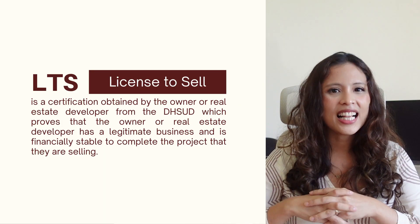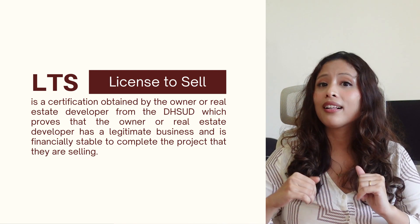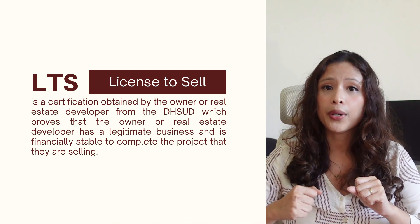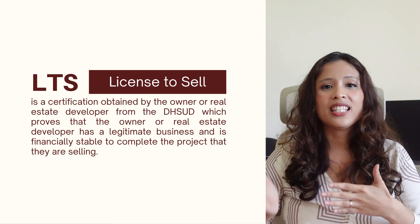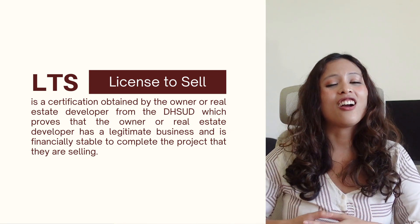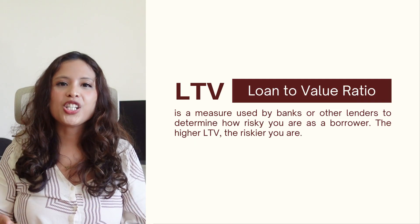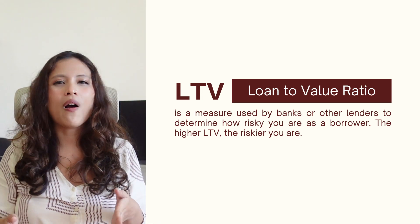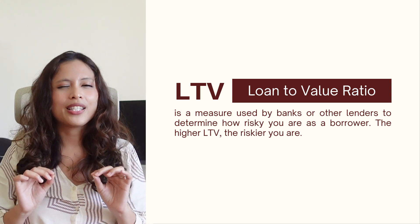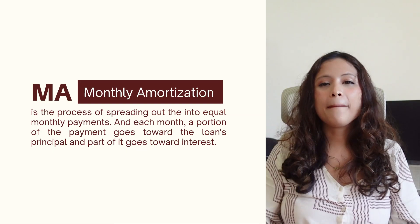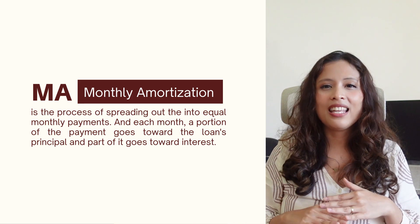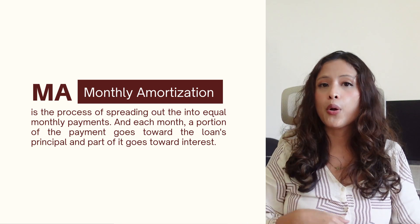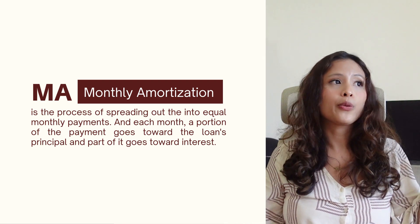LTS, for License to Sell, is a certification obtained by the owner or real estate developer from the DHSUD which proves that the owner or real estate developer has a legitimate business and is financially stable to complete the project that they are selling. LTV, for Loan to Value Ratio, is a measure used by banks or other lenders to determine how risky you are as a borrower. The higher the LTV, the riskier you are. MA, for Monthly Amortization, is the process of spreading out the loan into equal monthly payments, and each month a portion of the payment goes toward the loan's principal and part of it goes toward interest.